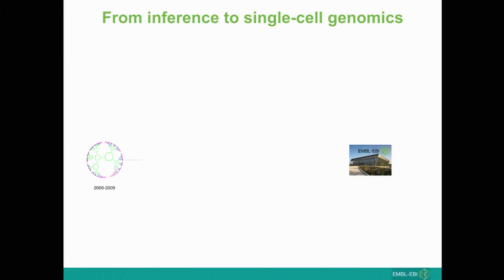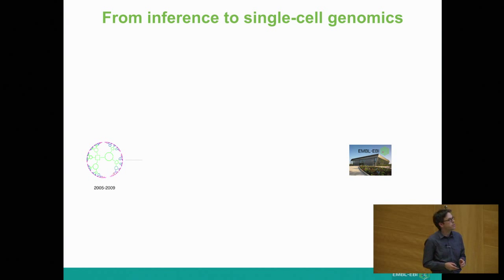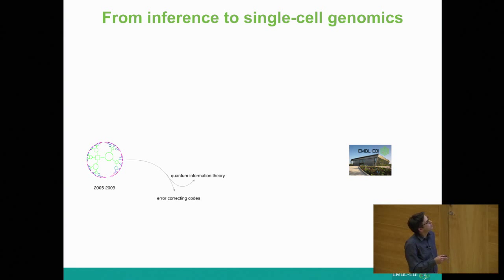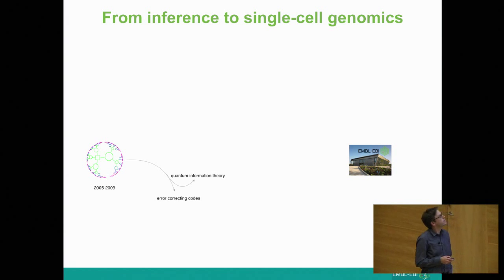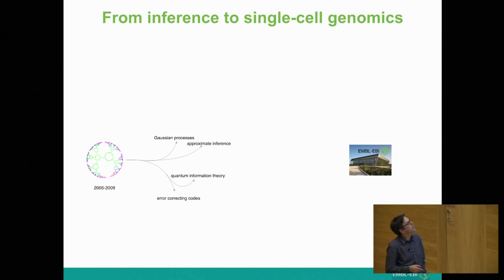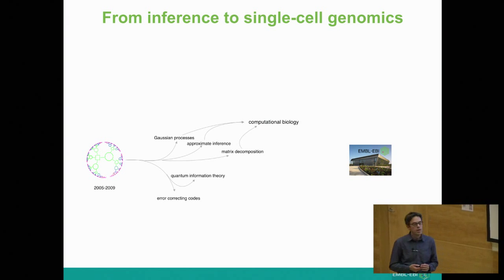I also want to give a bit of a historical perspective of how we got where we are. I did my PhD in the inference group between 2005 and 2009. At the time it was an extremely diverse research environment — about six PhD students each working on completely different topics, ranging from computational biology to information processing systems and human-computer interface systems. This diversity was within our PhD theses too, touching on information theory, error-correcting codes, Gaussian processes, and approximate inference.